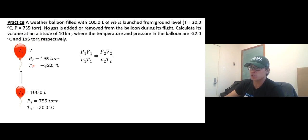This is situation two. Convert degrees Celsius to Kelvin first, so plus 273. Same thing with T2—we're going to use Kelvin. No gas is added or removed, so N1 and N2 are the same and equal; you can cancel them out.